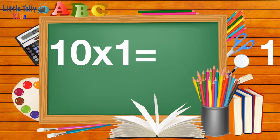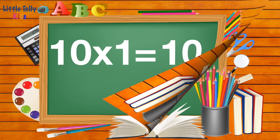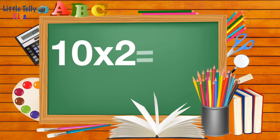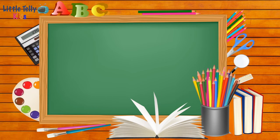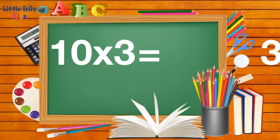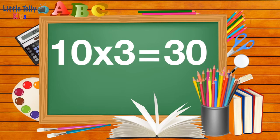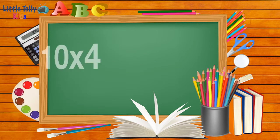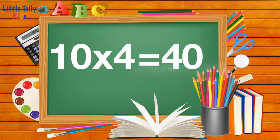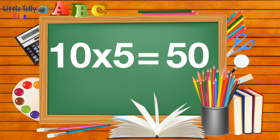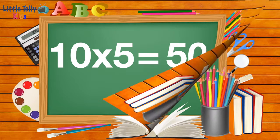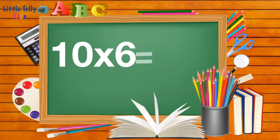Ten ones are ten. Ten twos are twenty. Ten threes are thirty. Ten fours are forty. Ten fives are fifty. Ten sixes are sixty.